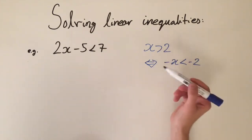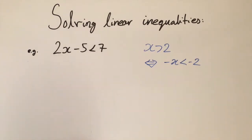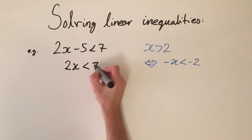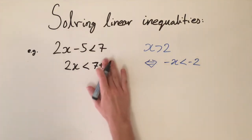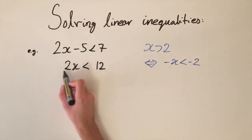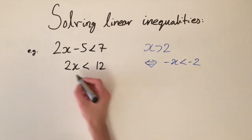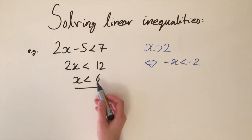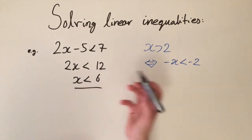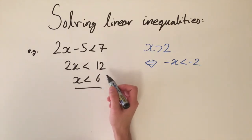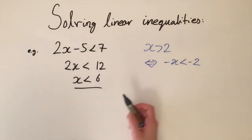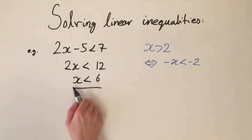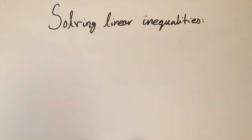That's pretty much the major difference when solving linear inequalities as opposed to equalities. For this simple example, we just add 5 to both sides to get 2x is less than 12, then divide by 2 — which is positive so we don't change the sign — giving x is less than 6. The solution is an infinite set of values: any number less than 6, like 5 or 4, satisfies this condition.